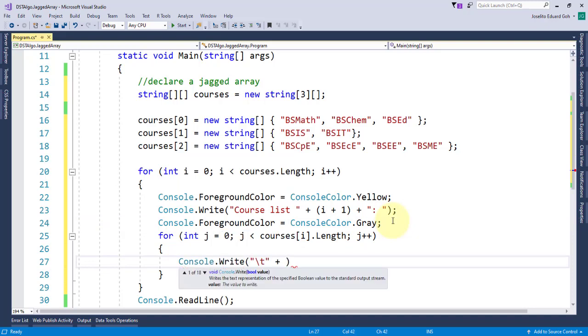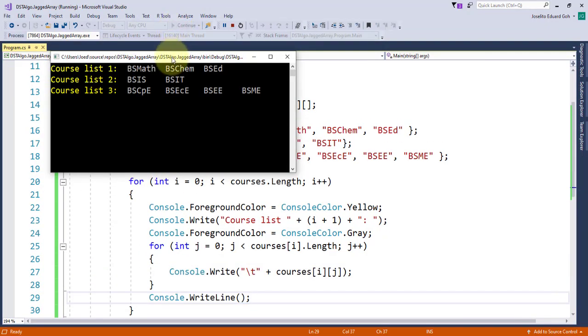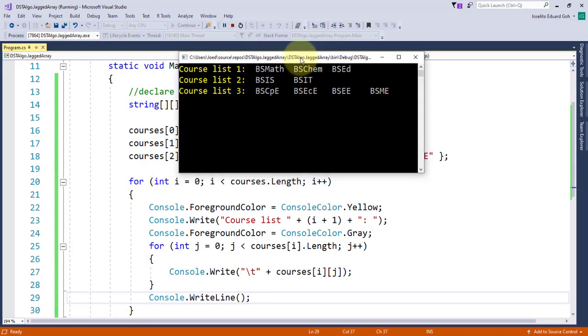Let's check the output. As you can see, each reference array's elements are displayed per row and they don't have to be of the same number of columns.